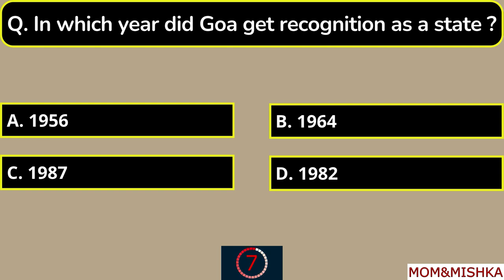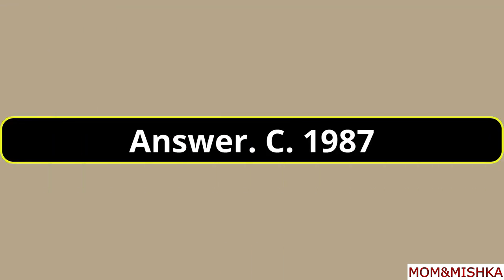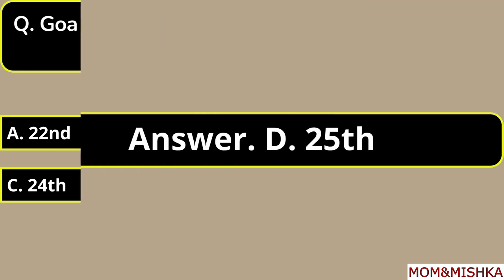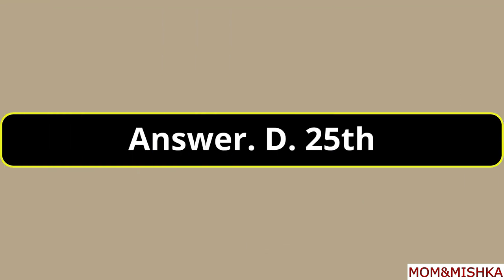In which year did Goa get recognition as a state? In 1987, option C. Goa attained statehood to become the blank state of India in year 1987 — 25th state, option D.